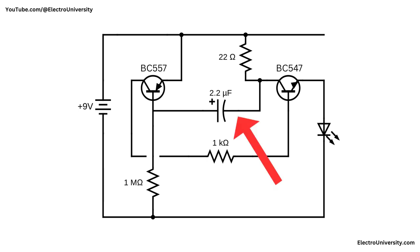The 2.2 microfarad capacitor stores and releases electric energy, kind of like a sponge for electricity. When the circuit is powered on, the capacitor starts charging through the 1 megaohm resistor. When it fills up to a certain point, it sends a little electric signal to the BC547 transistor, which turns it on.